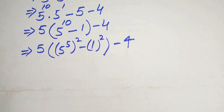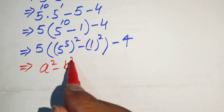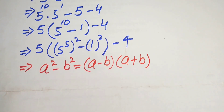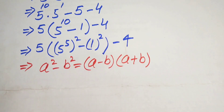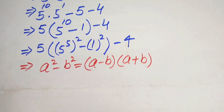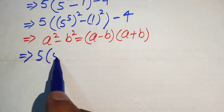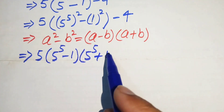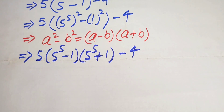We apply the difference of squares identity: a squared minus b squared equals a minus b times a plus b. Applying this, the expression becomes 5 into the quantity 5 to the power of 5 minus 1, times 5 to the power of 5 plus 1, minus 4.